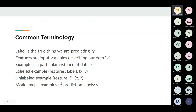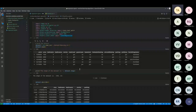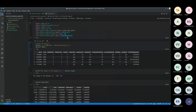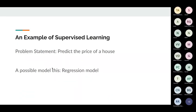Models are what help you in predicting. In this case, we're using linear regression for predicting the price of a house.